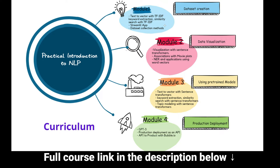Module 2 will focus heavily on data visualization — how you can convert any document into a two-dimensional or three-dimensional vector and visualize it on a 2D grid. For example, you can plot movies and directors together to see associations. We'll also look at practical applications of word vectors and named entity recognition (NER).